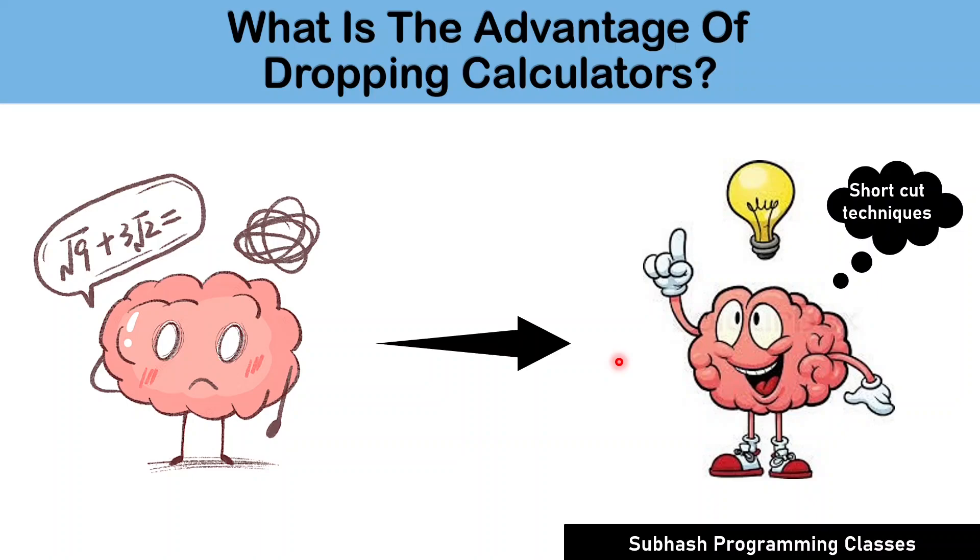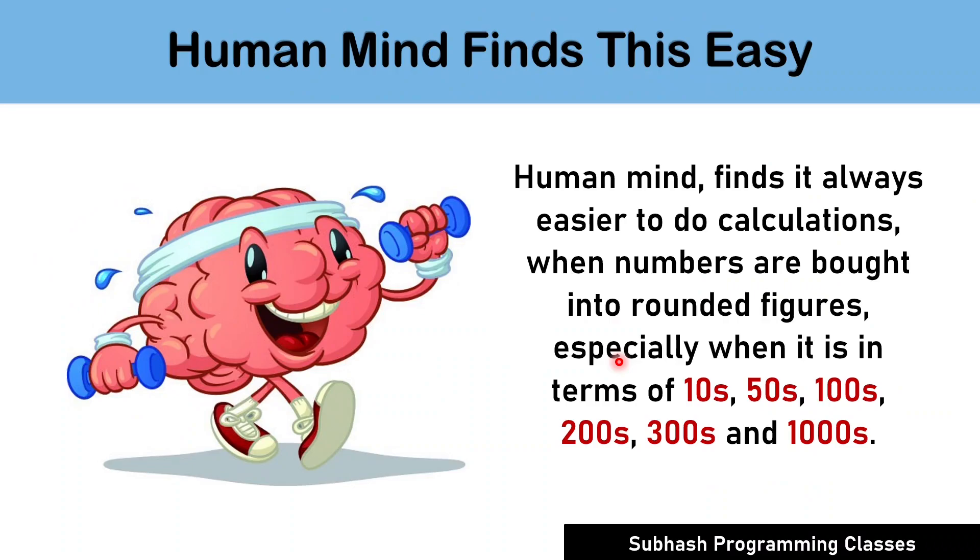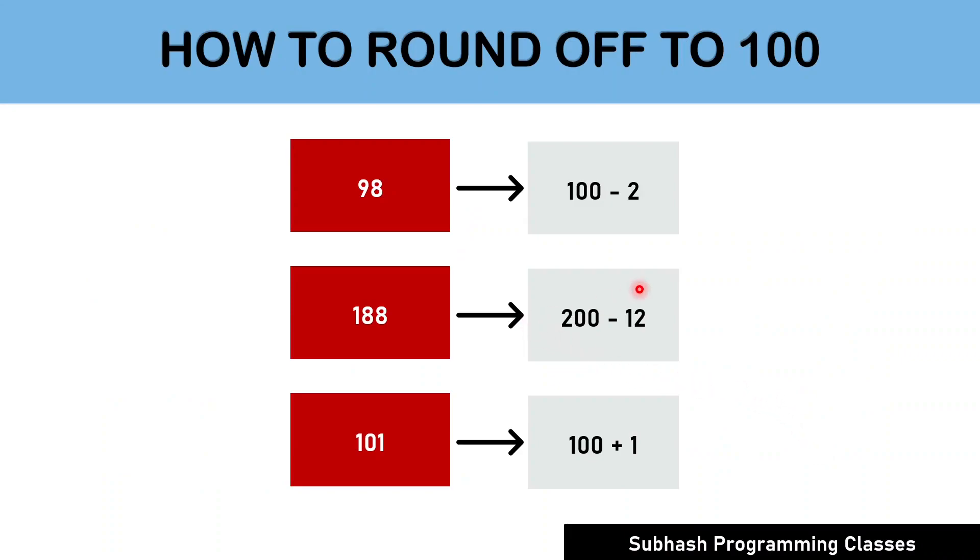Now, let us get into the meat of this lesson. Let us start learning different methods to do mathematical calculations mentally. Let us start with addition and subtraction. We can perform complicated addition and subtraction if we can break up those numbers into smaller and easier numbers. Human mind finds it always easier to do calculations when the numbers are brought into rounded figures, especially when it is in terms of tens, fifties, hundreds, two hundreds, three hundreds and thousands. So, let us solve problems by trying to bring our numbers into the forms of tens or hundreds before solving it mentally.